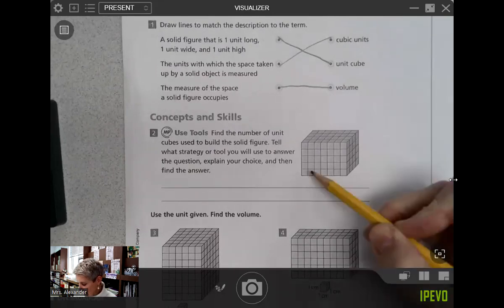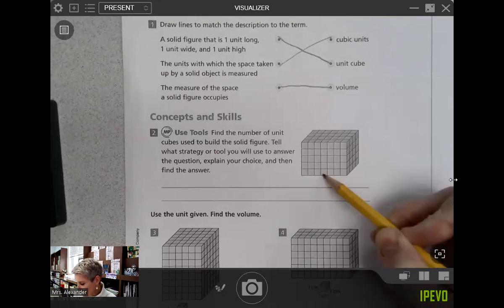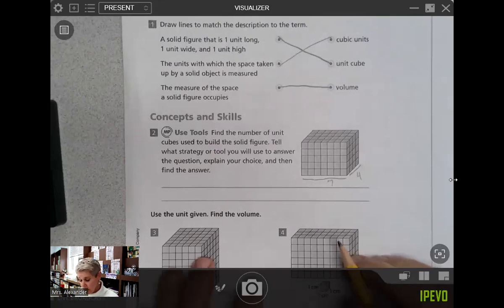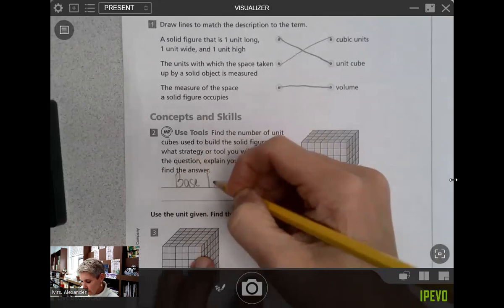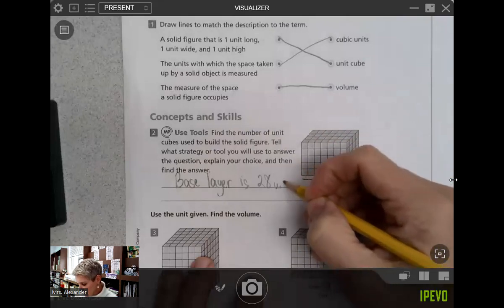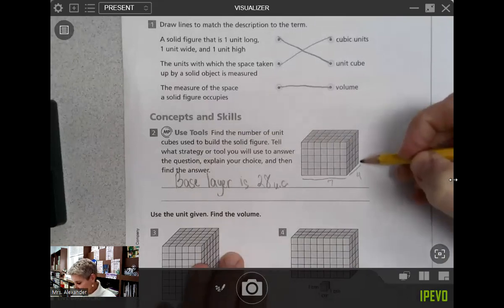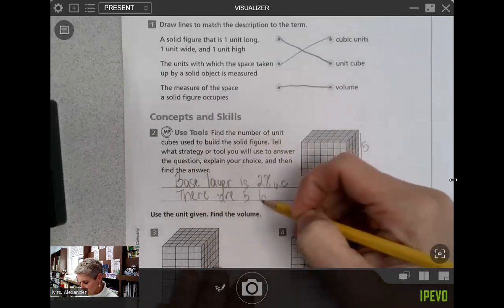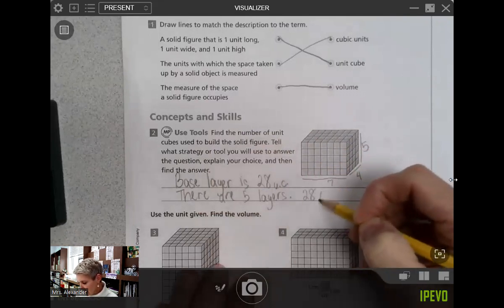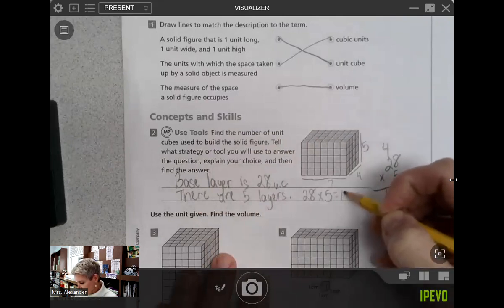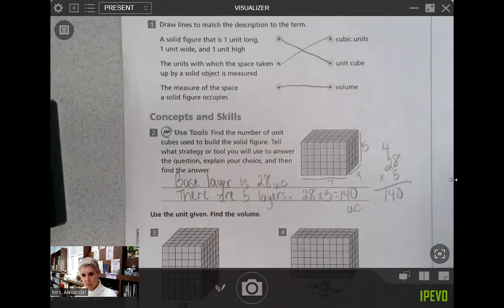The way I would do that is I would look at how many I see in this front row, and that would be seven. I'm going to label it as seven. And I can see that there are four rows of seven. So my strategy would be to find the base layer is seven times four, 28 unit cubes. I'm going to abbreviate. And then I would look at how many layers there are. One, two, three, four, five layers. There are five layers. So 28 times five, I'll do a little bit of work to the side, equals 140 unit cubes. All right, so I kind of explained my answer and what I was doing as I solved.